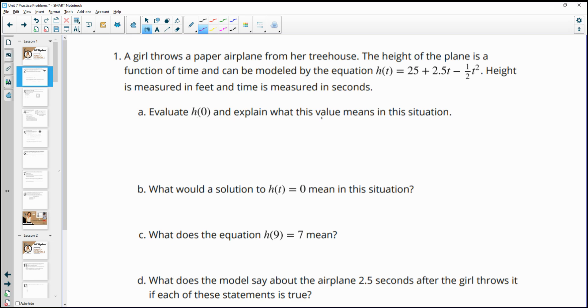Evaluate h of zero and explain what the value means in this situation. So here we're plugging in a time of zero and then it's going to give us back the height. This means in this situation that this is the initial height that the plane was launched at.